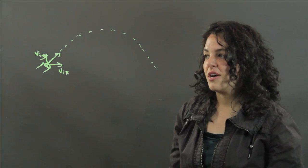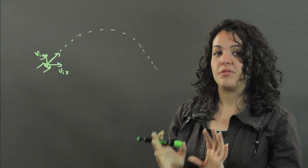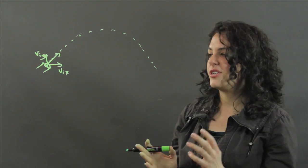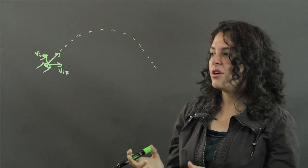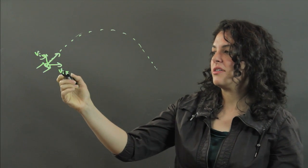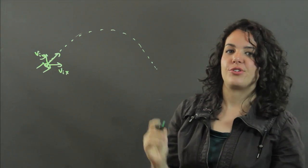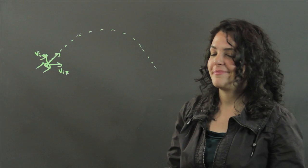So in order to find the horizontal velocity of a projectile, all you need to know is what the initial velocity was, and get its x component. And it never changes throughout your parabolic path. Thank you.